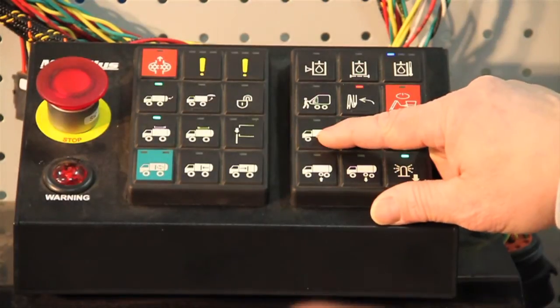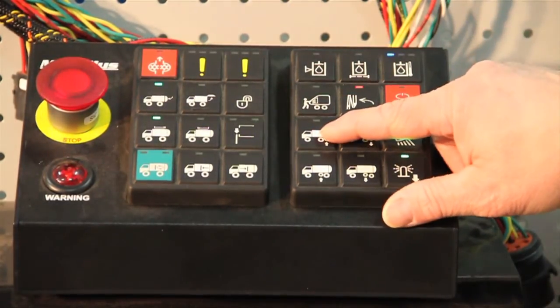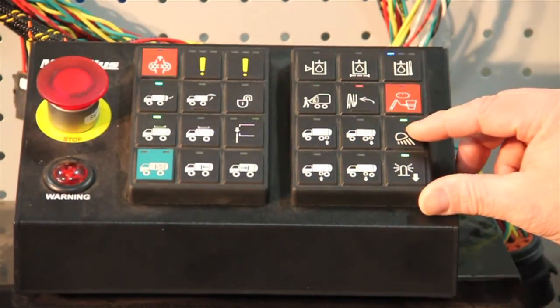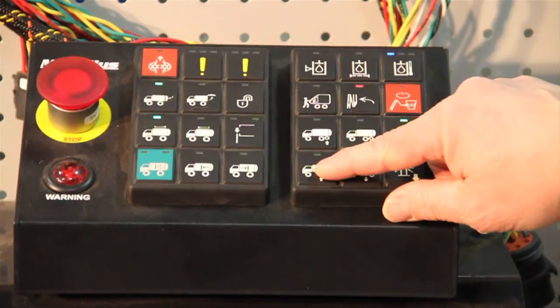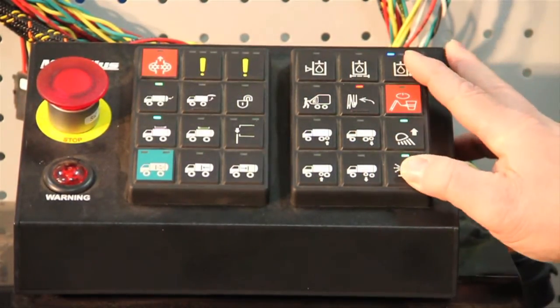Stepping down from here, we have icons that will allow us to raise our tag axles, lower our tag axles, turn on our work lights, raise our pusher axles, lower our pusher axles, or turn on our strobes.